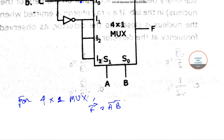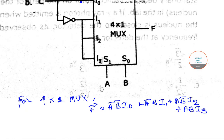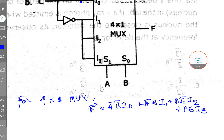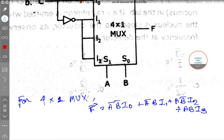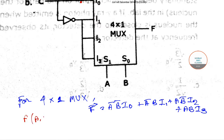In general, for a 4×1 MUX, we can write: f equals a-bar b-bar i0, plus a-bar b i1, plus a b-bar i2, plus a b i3. These are the four input select terms: a-bar b-bar i0, a-bar b i1, a b-bar i2, and a b i3.